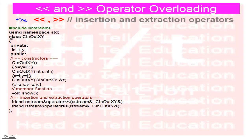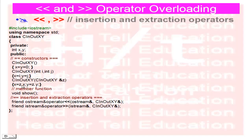Now let's start. I have created one class named CInOutXY with private variables of type int x and y. Publicly I have created some member functions and constructors: a zero-argument constructor, a two-argument constructor, a copy constructor taking a class object reference and assigning values, and one member function void show() to print the values. The function declarations for insertion and extraction operator overloading use the friend keyword.